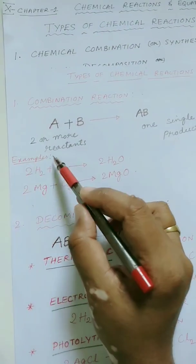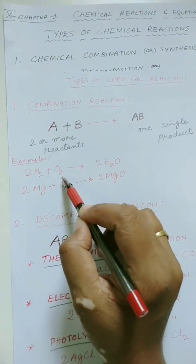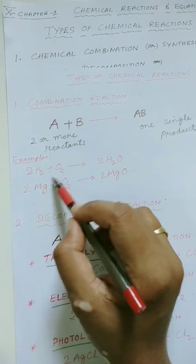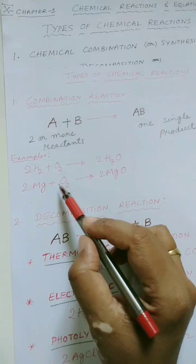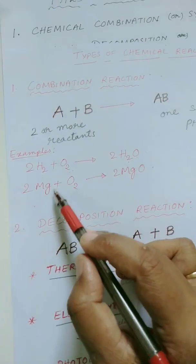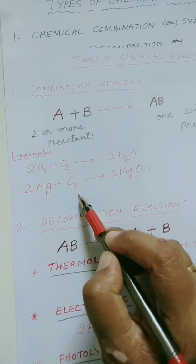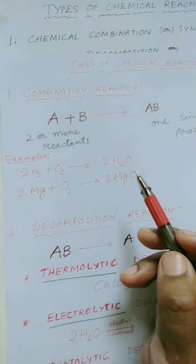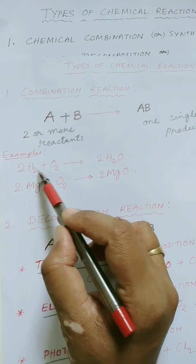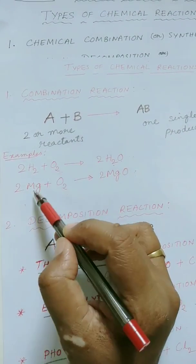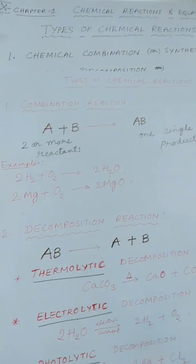Let us give some examples for this kind of reaction. You can see here, hydrogen reacts with oxygen — or I can say hydrogen combines with oxygen — to form a single product, that is water. Another simple example: magnesium combining with oxygen. Magnesium reacts with oxygen to form magnesium oxide. In both cases, there are two reactants combining to form a single product. This is what combination reaction is all about.